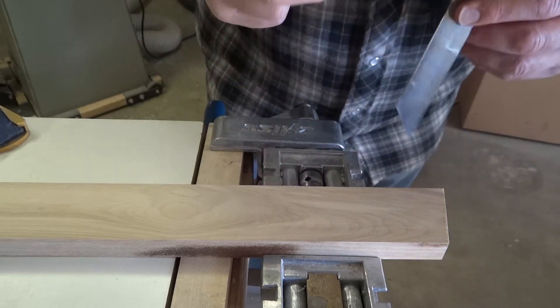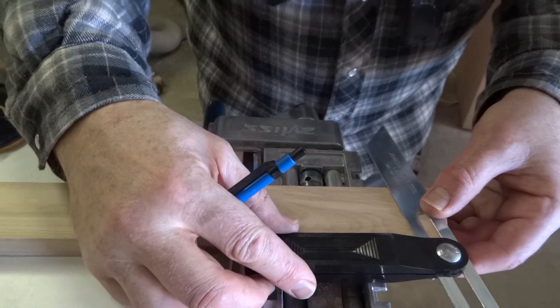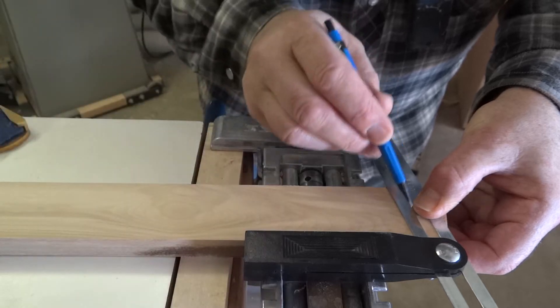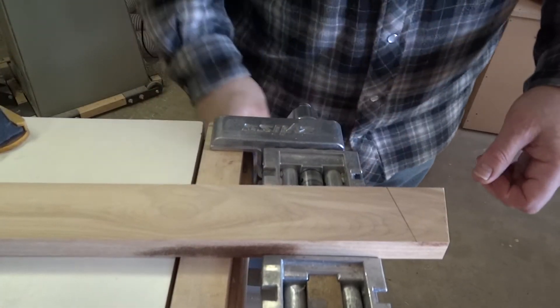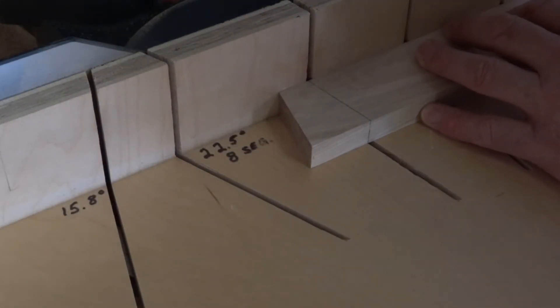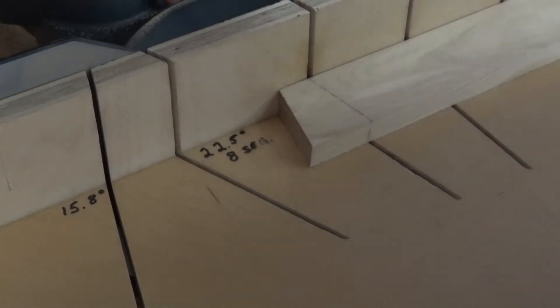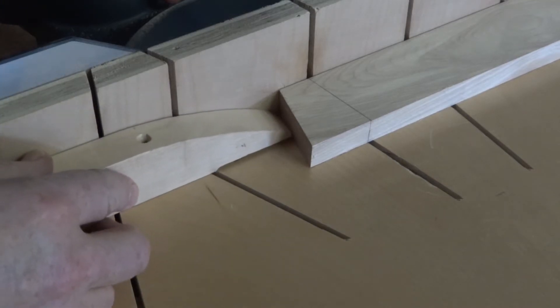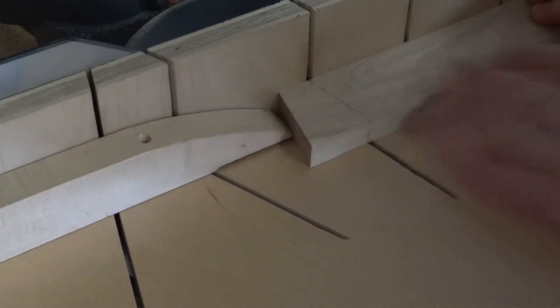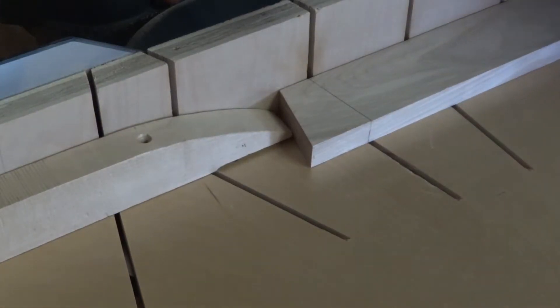Now I will set my bevel gauge to the angle I cut on the end of the board. I use the bevel gauge to mark the face so I can line it up with the slot on my miter saw. With the board on the miter saw and the line on the slot, I position and lock down a stop to make every cut a consistent length.